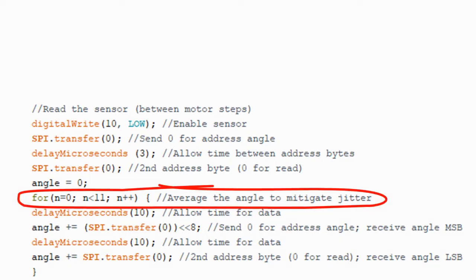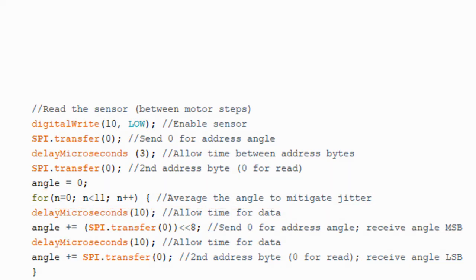For this application, we average a number of angle measurements to mitigate motor jitter. Alternatively, a built-in digital filter function can be programmed in the sensor.